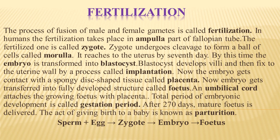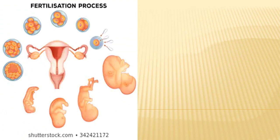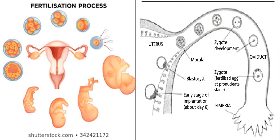The embryo completely contacts a spongy disc-shaped tissue called the placenta, which provides protection and nourishment to the embryo, removes waste products, and aids in respiration by providing oxygen. The embryo then develops into a fully developed structure called the fetus, which attaches to the placenta by means of the umbilical cord. The total period of embryonic development is called the gestation period — about 270 to 280 days in humans — after which the mature fetus is delivered in a process called parturition. You can see the different developmental stages — morula, blastula, and implantation — in the image.